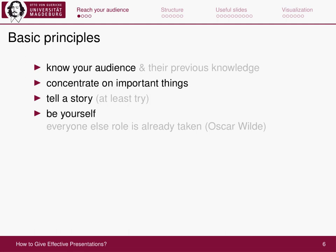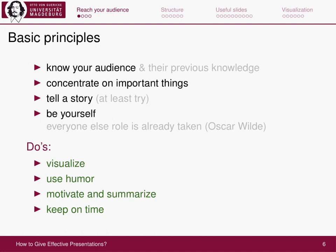What helps the audience listen to you is if you try to tell a story. Try to put it into something that is nice to listen to. Also try to be yourself — there's this nice quote from Oscar Wilde: everyone else's role is already taken. Some general dos: do visualize. You know the saying, a picture says a thousand words. Try to be a little funny, because this cheers people up and helps them listen to you. Motivate your audience about why what you're talking about is important. For longer talks, try to summarize in between what you've already covered and what will come. And especially important at conferences: keep on time.